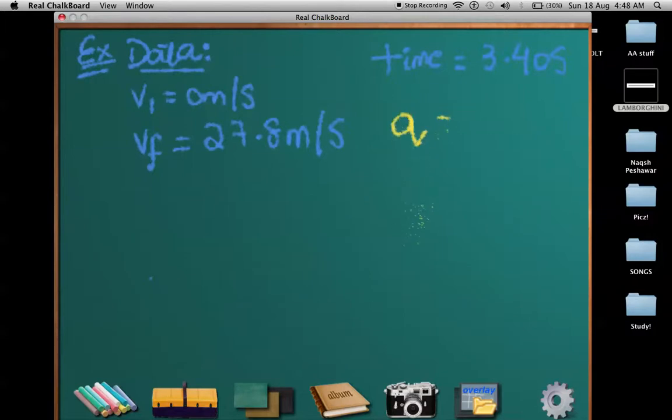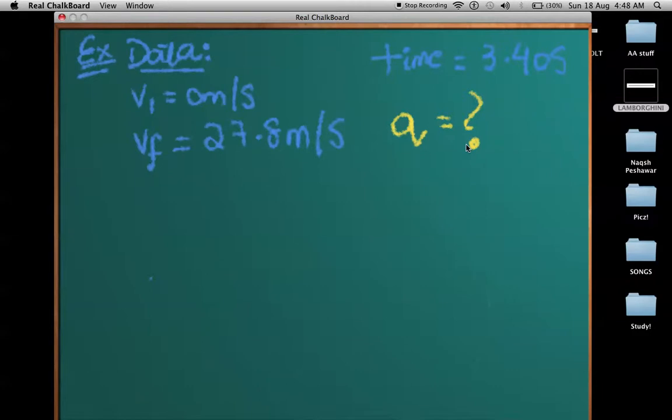We all know, and if you don't remember just revise the previous videos, that acceleration is given by change in velocity divided by change in time. So change in velocity means final velocity minus initial velocity divided by change in time.